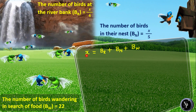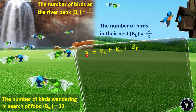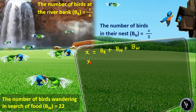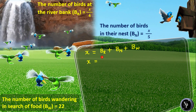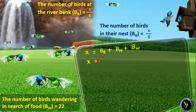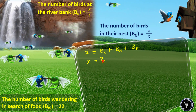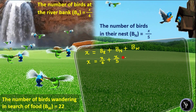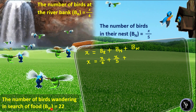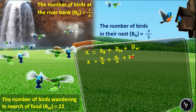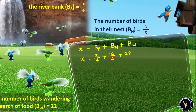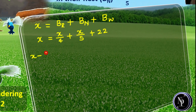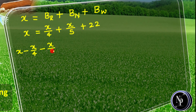Let us substitute these values and find the value of x first, and then the number of birds in their nest, x by 5. So: x is equal to x divided by 4 plus x divided by 5 plus 22. Since we need to find the value of x, let us take the terms containing x to the left-hand side. Doing so: x minus x by 4 minus x by 5 is equal to 22.